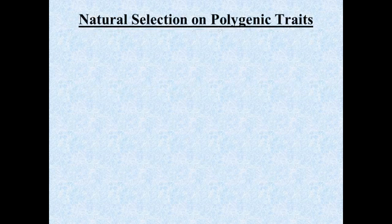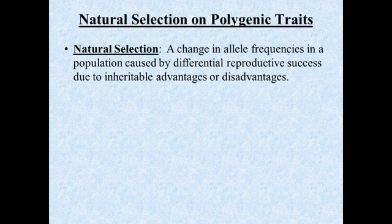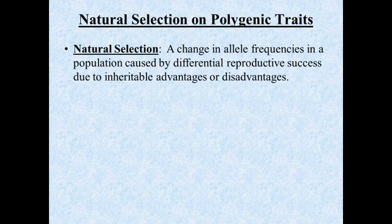First, we should review two terms — natural selection and polygenic traits — to make sure we understand what we mean by those. Natural selection, as we have discussed earlier, is a change in allele frequencies in a population caused by differential reproductive success. What that means is you have some organisms leaving more offspring than others, and the reason for that is due to some inheritable advantages or disadvantages.